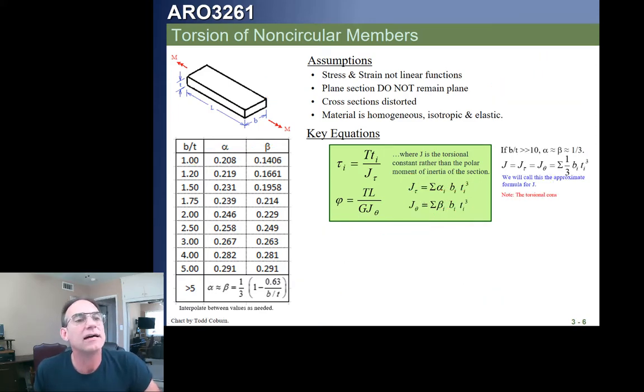If our B over T ratio is rather large, then our alpha and our beta are roughly one-third. But we're actually not going to use this because we're going to use this equation I gave you on the lower left, where if our B over T ratio is five or greater, we're just going to use this formula equation right there.